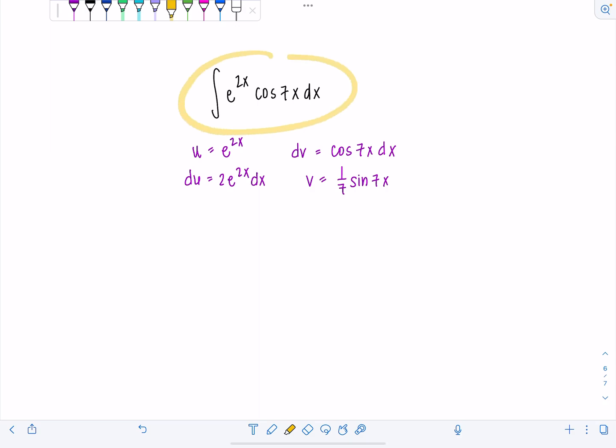I'm going to actually call this original integral I. And basically that's what we're trying to solve for, or evaluate or find. So I, my integral is equal to, remember by parts you have uv minus the integral of vdu. So uv, that's going to be 1/7th e to the 2x sine 7x minus, and then we have vdu, integral of vdu. So that's going to be integral of 2/7ths e to the 2x sine 7x dx.